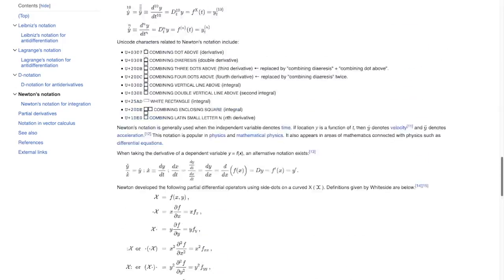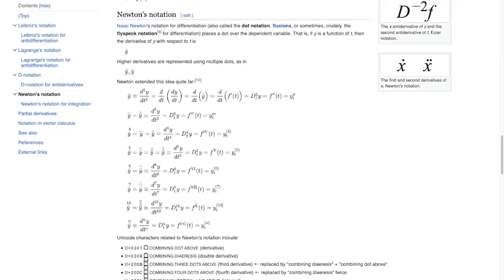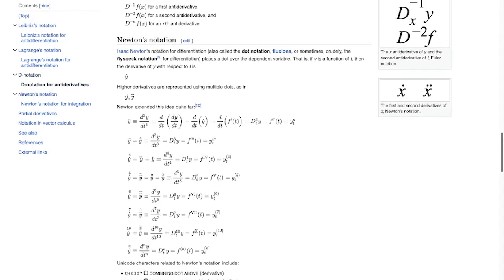Where'd it go? Did I pass right by it? There it is. Newton's notation. It replaces the primes with dots above. And so the dot and the prime notation have their benefits and drawbacks. One of the benefits is it's very compact.